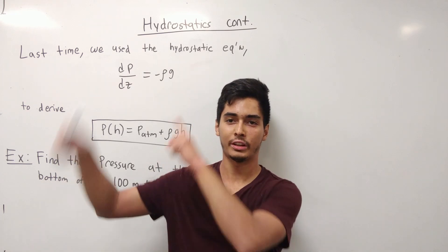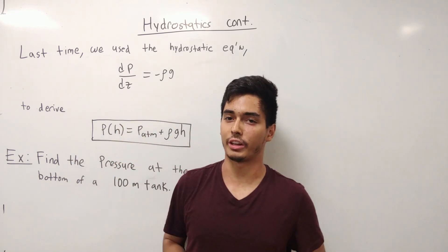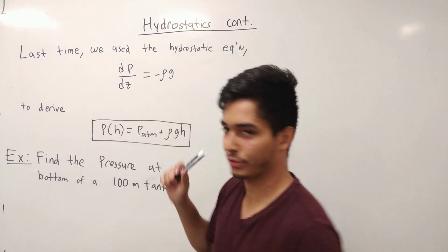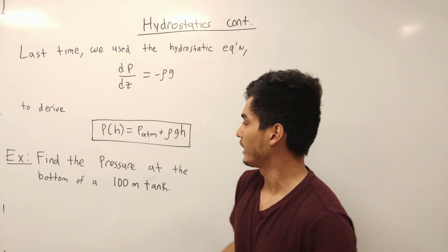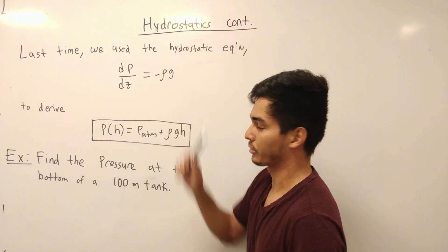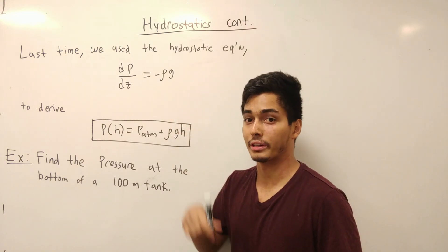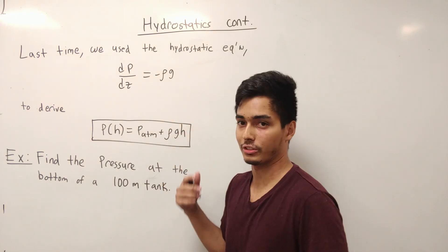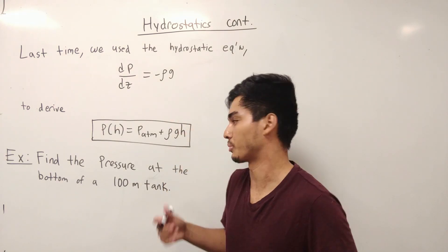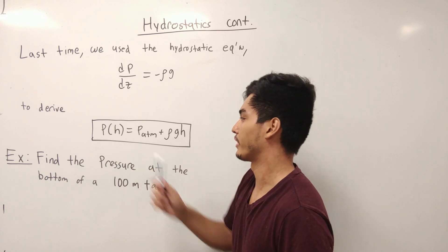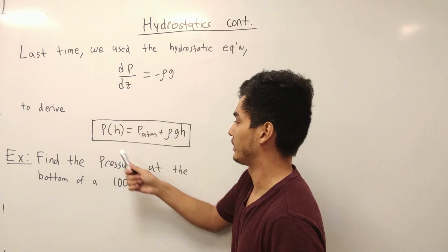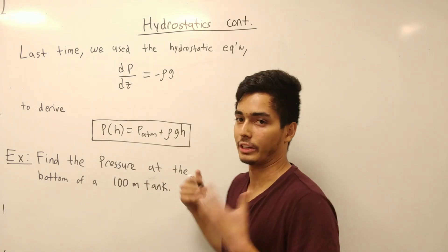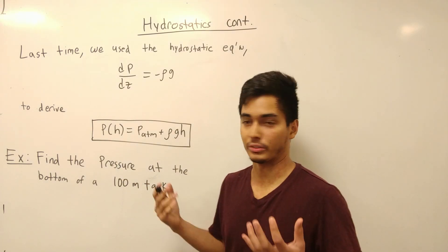We're continuing fluid mechanics, we're doing hydrostatics. Before, we derived the hydrostatic equation and then used it by integrating with boundary conditions — because it's a differential equation — to arrive at the hydrostatic equation at equilibrium for open systems.